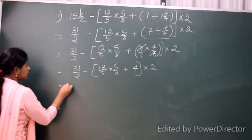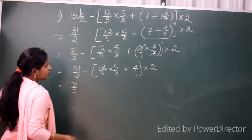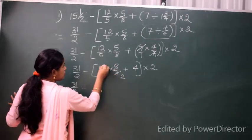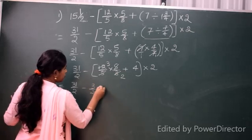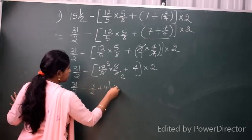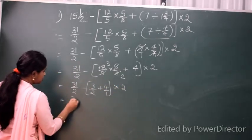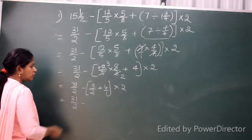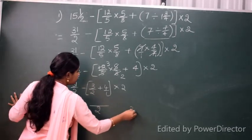Now we have 31/2 minus [12/5 × 5/8 + 4 × 2]. Let me work through the bracket.